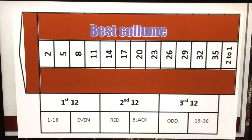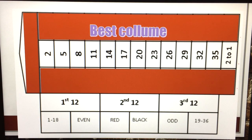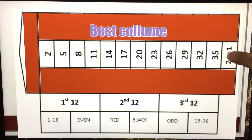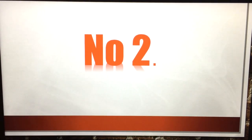The first thing they talk about in this strategy is the best column you can choose on the roulette layout, which is the second column: numbers 2, 5, 8, 11, 14, 17, 20, 23, 26, 29, 32, and 35. If you want to bet on a column, the second column is the best option.